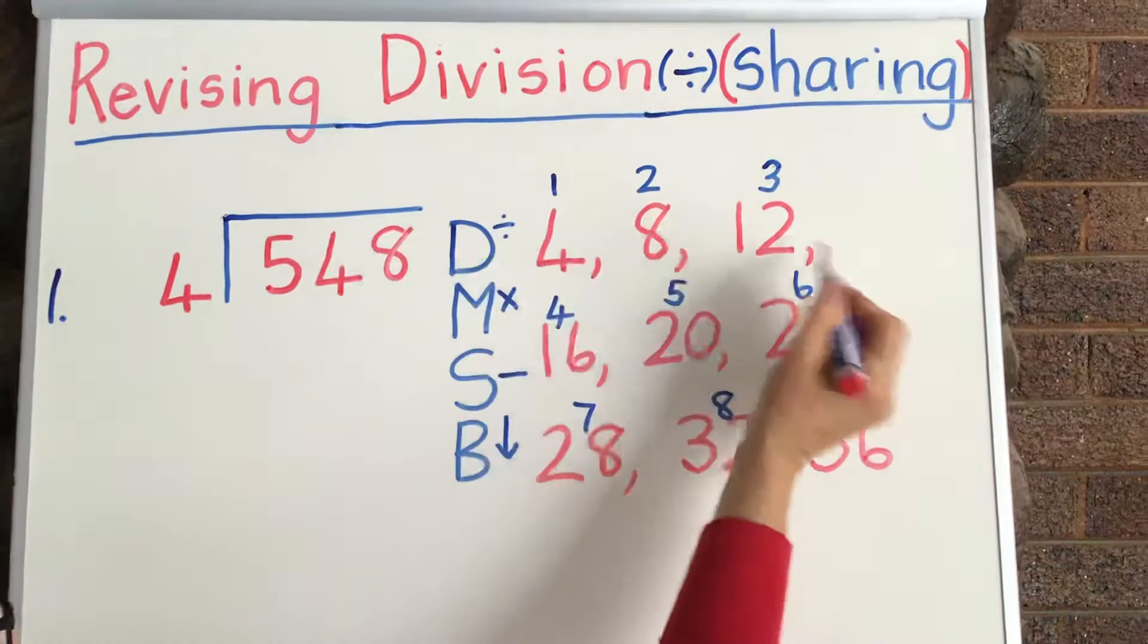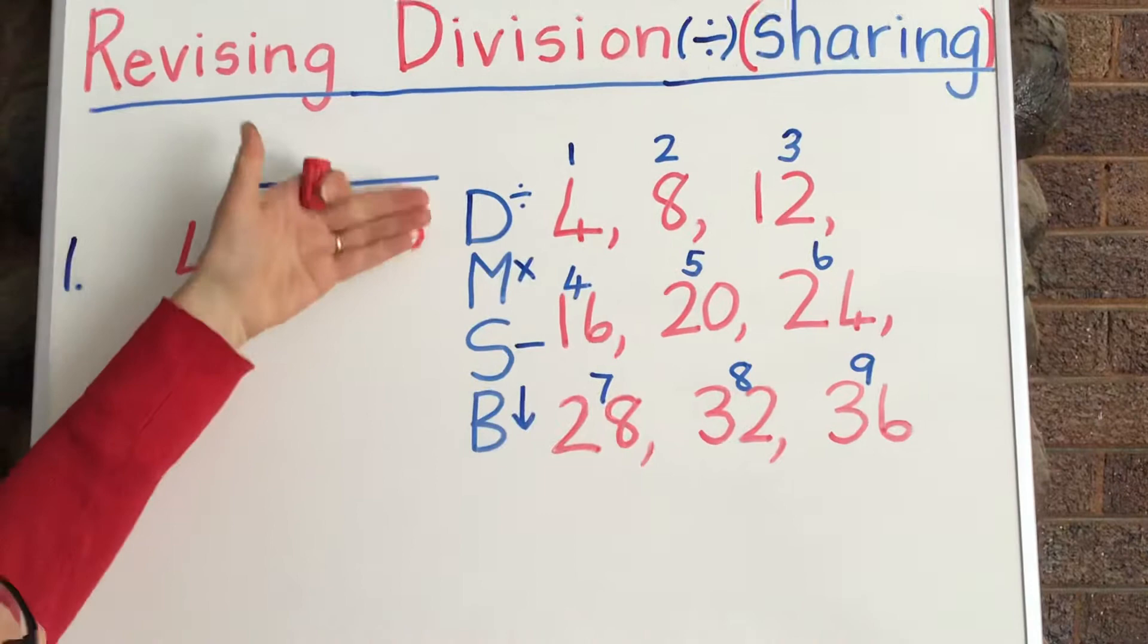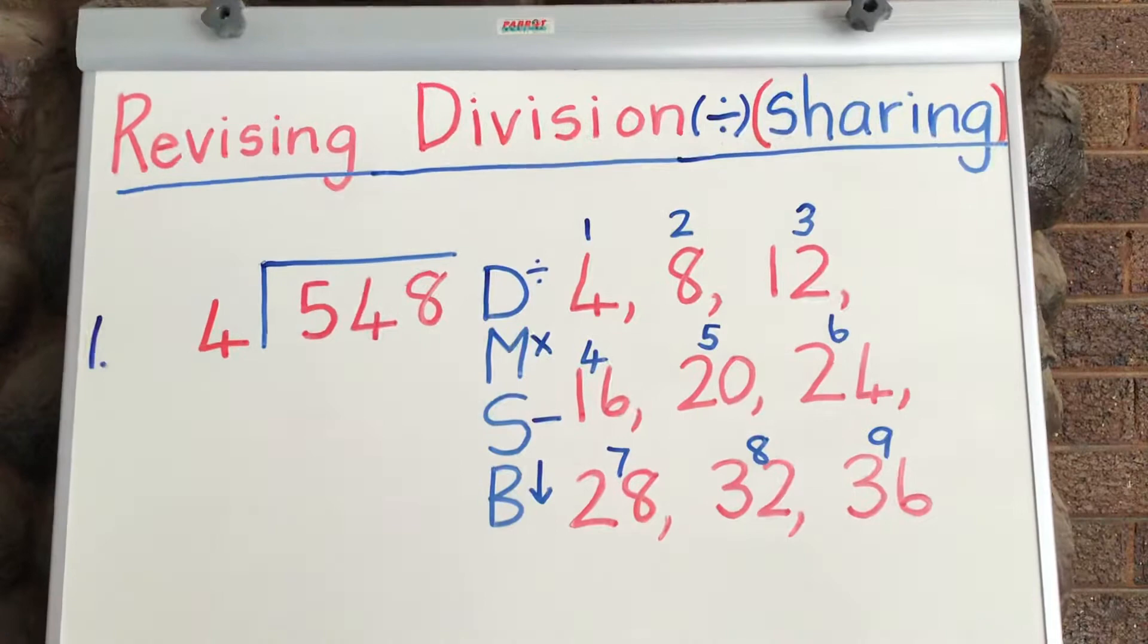Now I've already written out our multiples, they're all ready for us. And I've written out daddy, mommy, sister, brother so that we remember the steps. Just to remind us which steps and the order of the steps that we take.